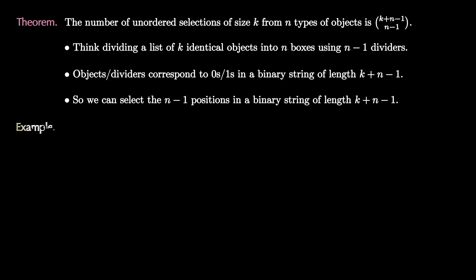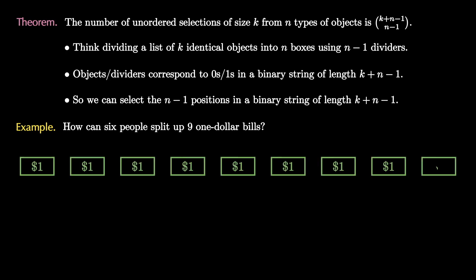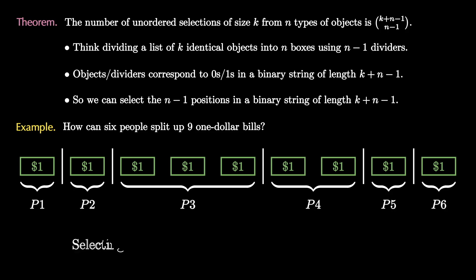Let's see another example. Suppose we have six people and they want to split up nine one dollar bills. We can imagine the nine identical one dollar bills pictured here and since we're splitting it among six people we need to place five dividers like this. To the left of the first divider goes to person one then person two person three person four person five and person six. We're selecting k equals nine objects from n equals six types so there is (14 choose 5) such ways to divide up nine one dollar bills to six people.